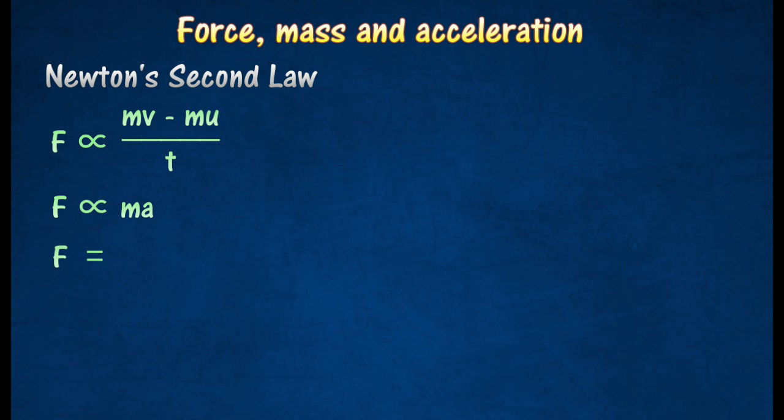By adding constant K, this equation can be obtained from the relationship F directly proportional to M A.